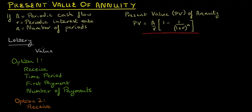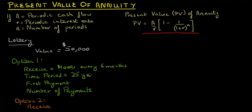Let's take an example. Suppose you win a $50,000 lottery and instead of receiving all $50,000 upfront, you're given two options. The first option is that you receive $1,000 every six months for the next 25 years, where the first payment will take place after six months.